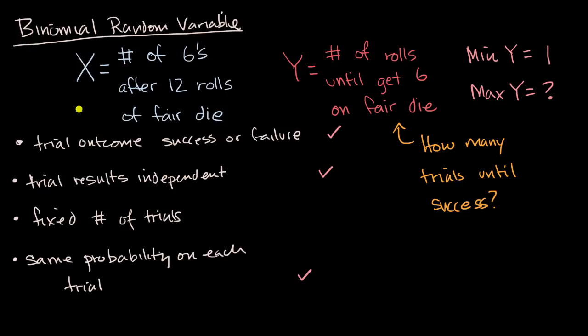While the binomial random variable was, how many trials, or how many successes, I should say, how many successes in finite number of trials? So if you see this general form and it meets these conditions, you can feel good it's a binomial random variable.